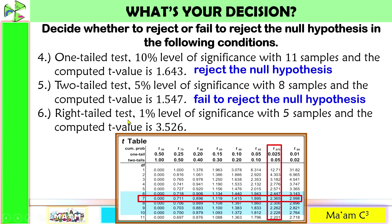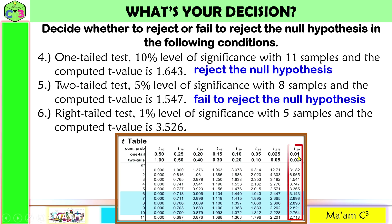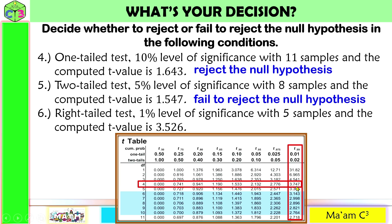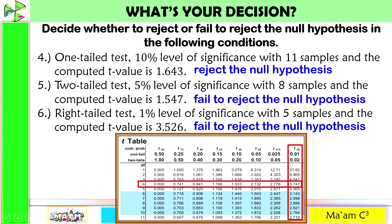Number 6 is a right-tailed test at 1% level of significance, meaning one-tail at 1%. With 5 samples, the degrees of freedom is 4. The critical value is 3.747. In a right-tailed test, if the computed value is less than the critical value, we fail to reject the null hypothesis.